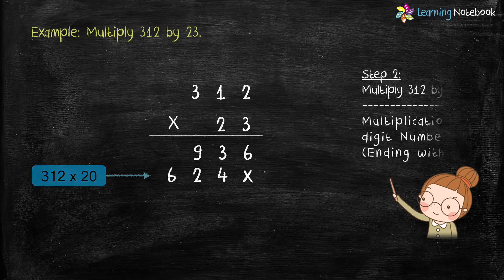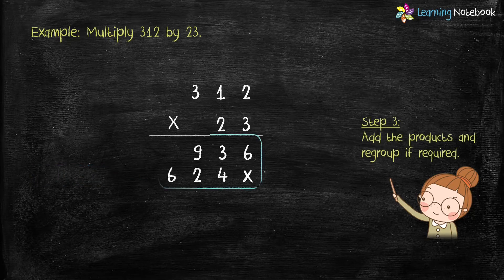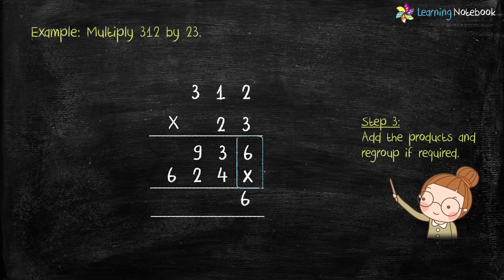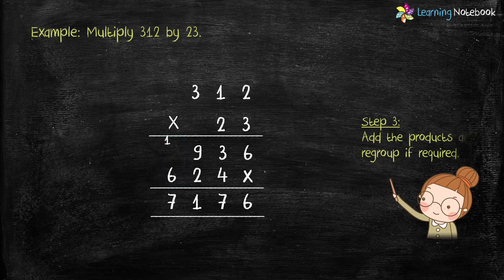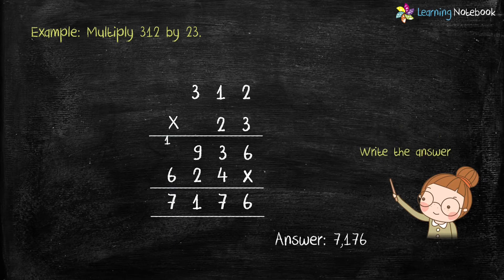So in step 3, let's add both these products. 6 plus 0 equals 6, 3 plus 4 equals 7, 9 plus 2 equals 11 — write 1 in the answer and 1 gets carried over. Next, 1 carry plus 6 equals 7. So we have got the answer as 7176.